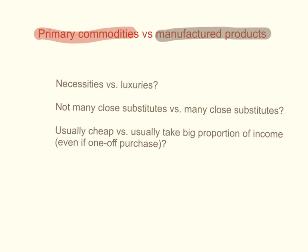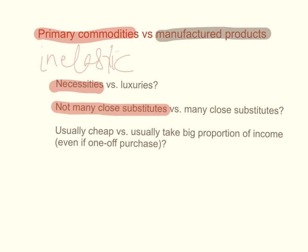Manufactured products are products produced by manufacturing industries. Primary commodities often have rather inelastic demand. The reasons are: they can be classed as necessities; they often don't have many close substitutes; and they are usually cheap.